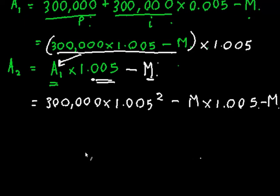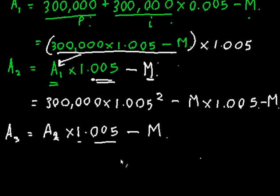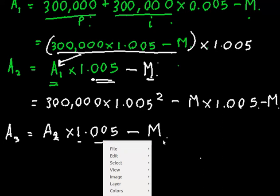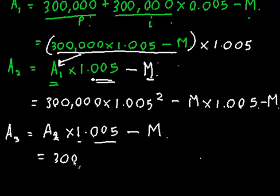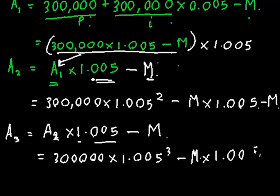Now, so if I keep doing this, so I'll do one more thing, I'll do A3 as well just to show you. So it's going to be A2 times 1.005, so whatever I'm owing at the second month plus the interest rate minus the monthly repayment. I end up getting 300,000 times 1.005 cubed minus M times 1.005 squared minus M times 1.005 and minus M. So right now you should start to be noticing a trend.